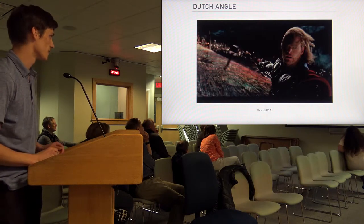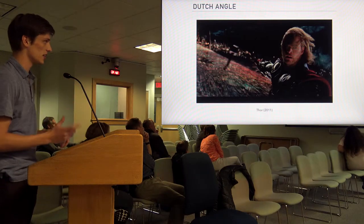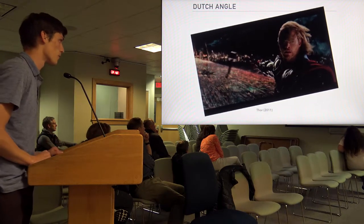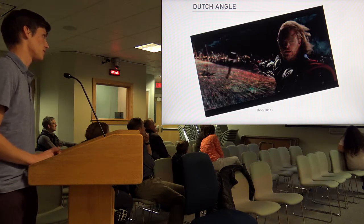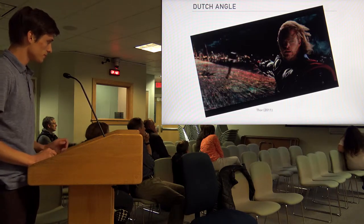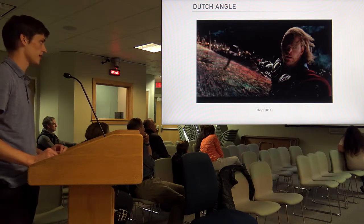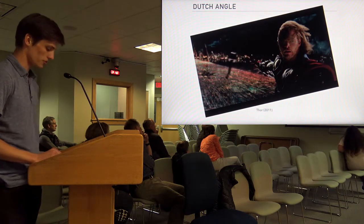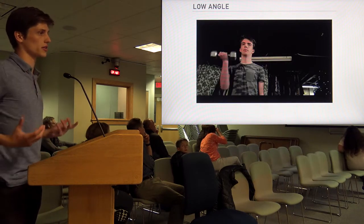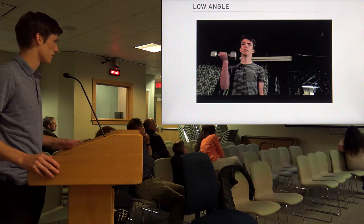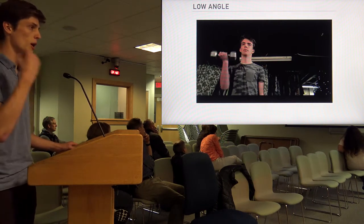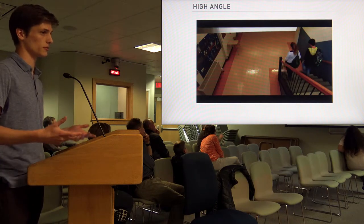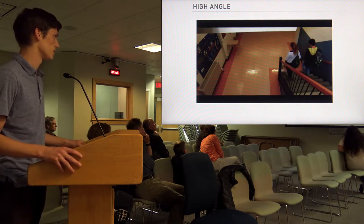Moving on to angles — these can be adjusted throughout the film. A Dutch angle is where you rotate the camera; this shot is from Thor. When it's tilted it gives more gravity to the shot, like the hammer is flying at him rather than just coming towards him. A low angle gives an overpowering sense of character — here it's used while Killian, one of our actors, is lifting weights. High angles give a different perspective from above and are also good for fight scenes.